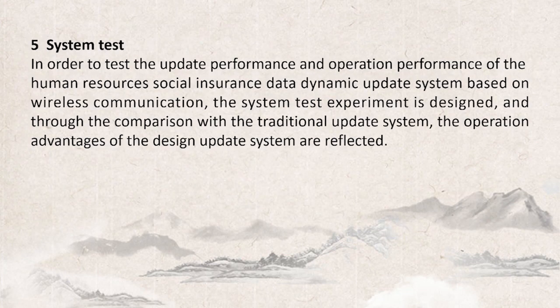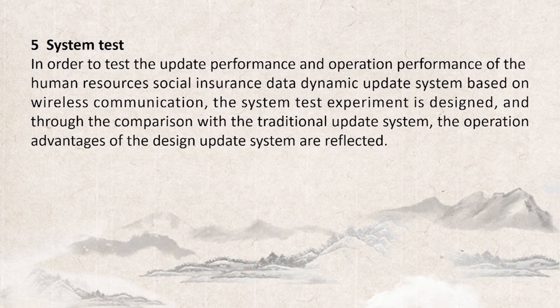System test. In order to test the update performance and operation performance of the human resources social insurance data dynamic update system based on wireless communication, a system test experiment is designed. Through comparison with the traditional update system, the operational advantages of the designed update system are reflected.